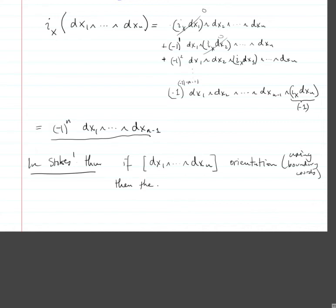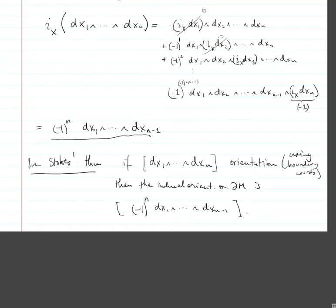But using coordinates where xn ≥ 0 defines the manifold, the induced orientation on the boundary is (−1)^n dx1 ∧ ... ∧ dx(n-1). You need to make sure that the atlas you're using for the boundary computation is compatible with this orientation, the one that has (−1)^n in front.